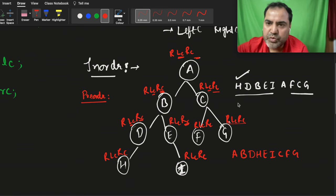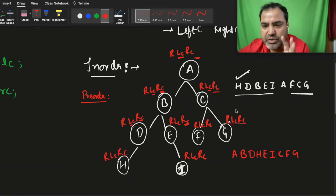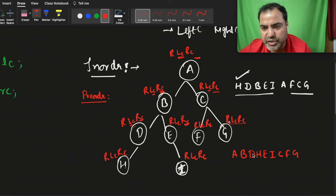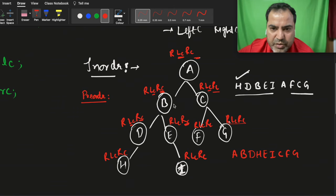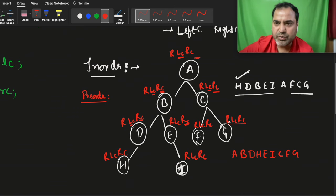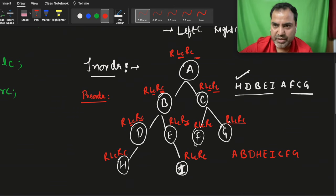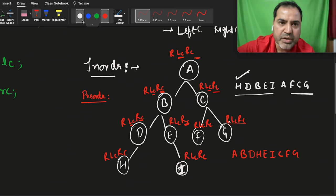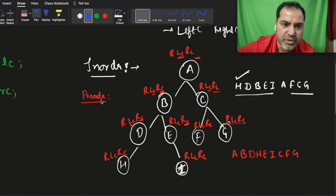So the pre-order is: a, b, d, h, e, i, c, f, g. After completing you can count the nodes — one, two, three, four, five, six, seven, eight, nine — nine nodes total. This is the pre-order. Now we will work on post-order as well.